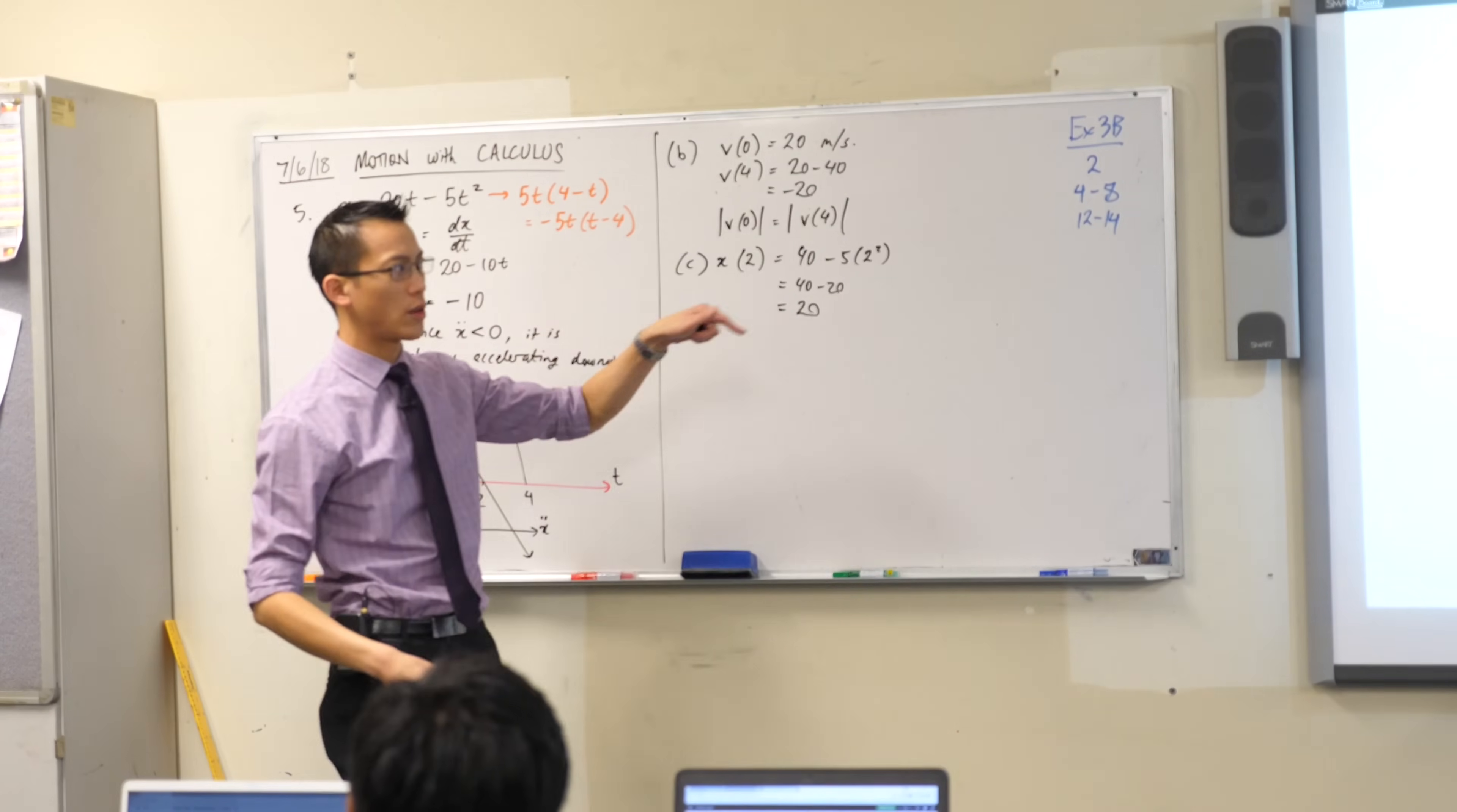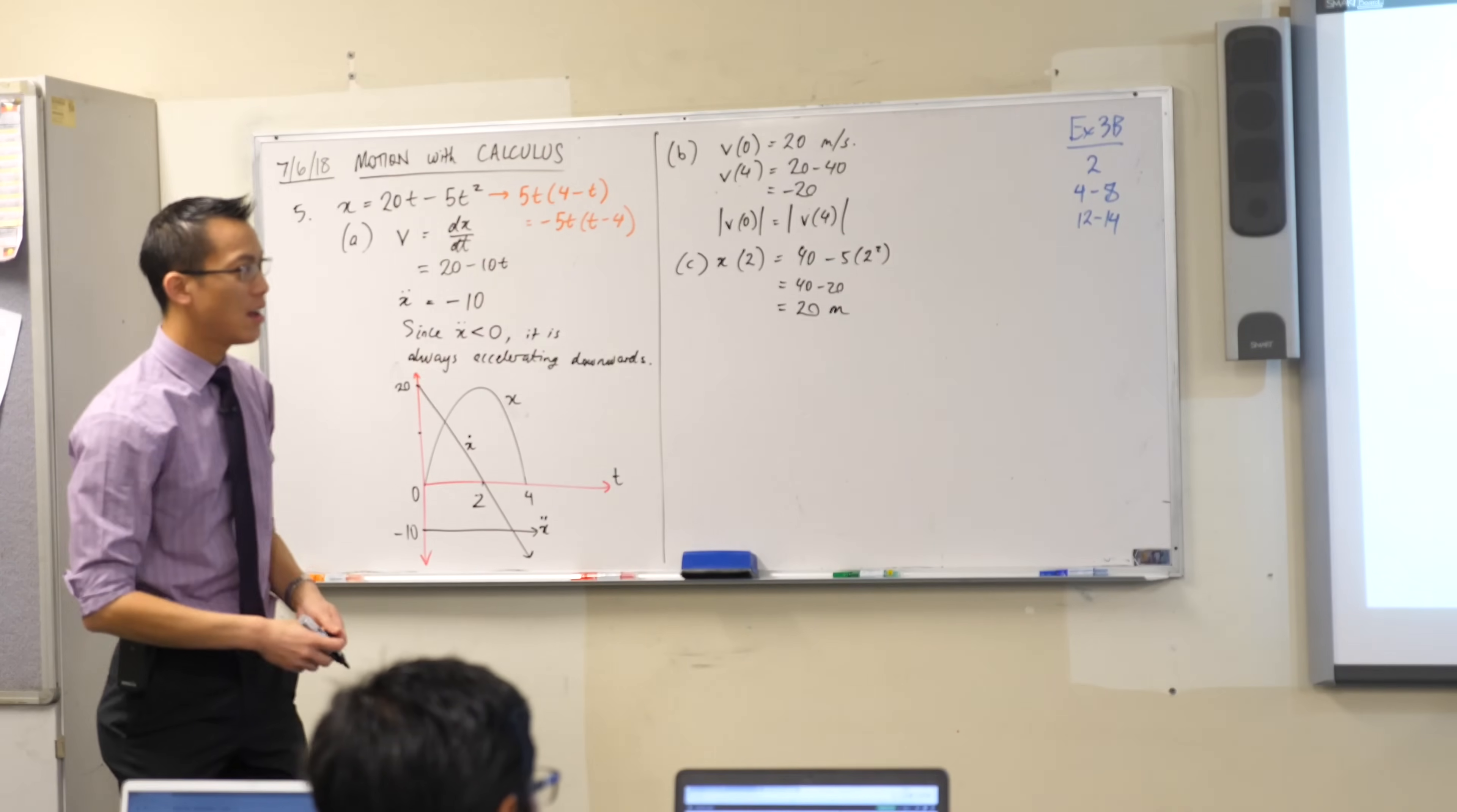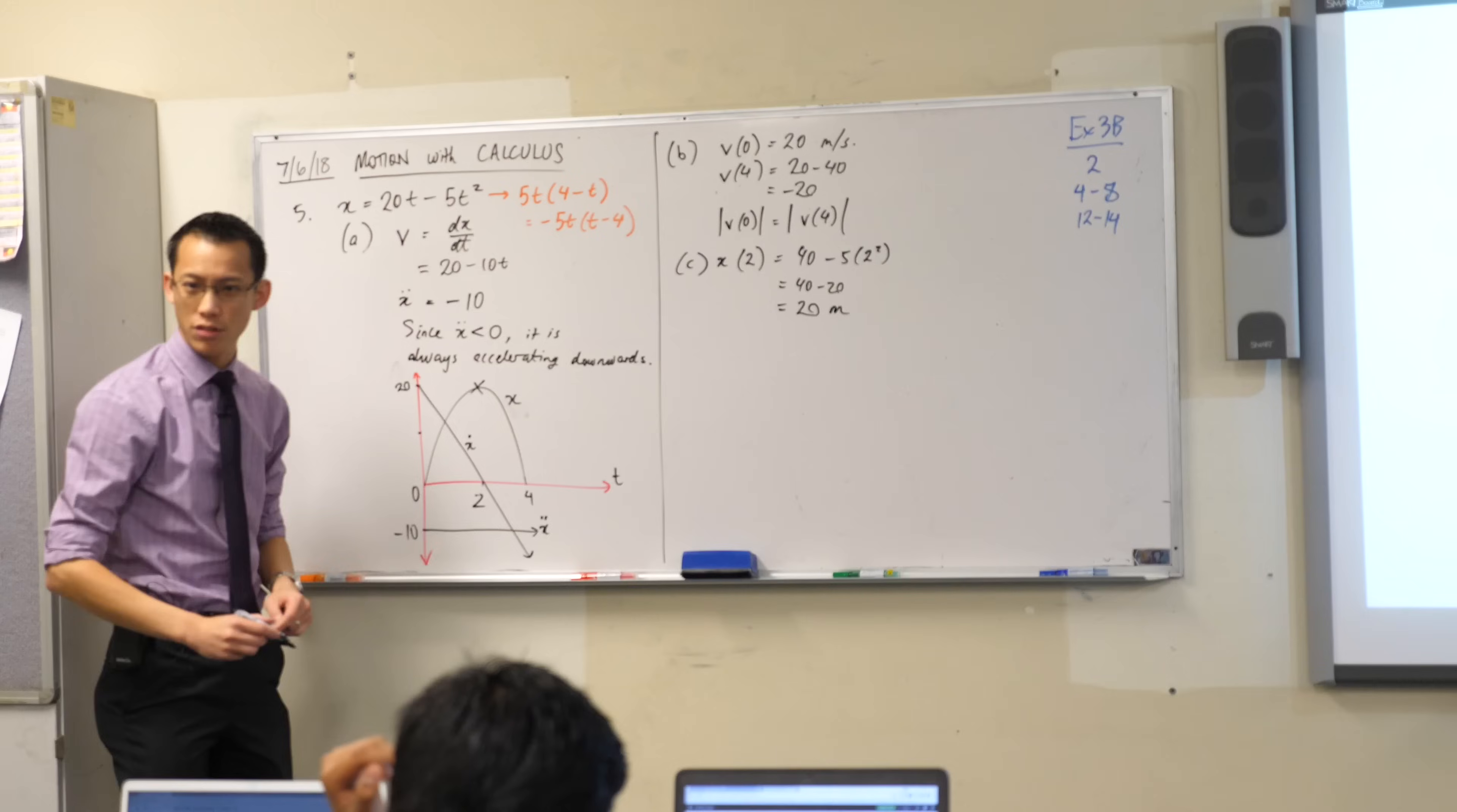Right, so have I answered the question at this point? I just need to have some units on there, because it's not centimetres, it's not kilometres, it's metres. Find the acceleration at the top of the flight. So the top of the flight is that point we just bothered finding just now, right?